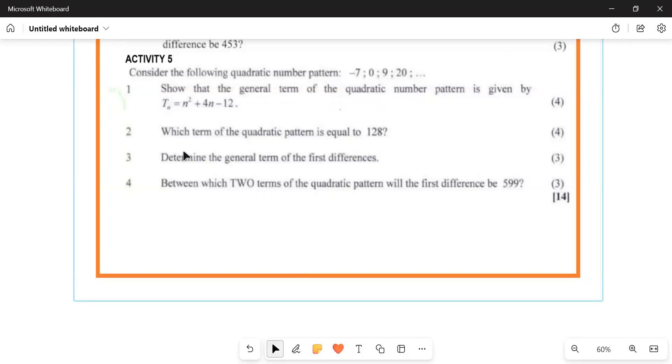Okay, Activity 5 says consider the following quadratic number pattern: -7, 0, 9, and 20. Question one shows that the general term of the quadratic number pattern is given by Tn = 2n² + 4n - 12.